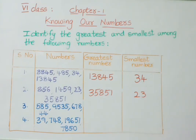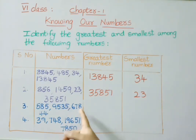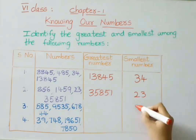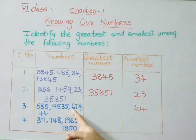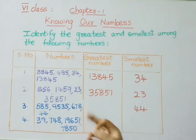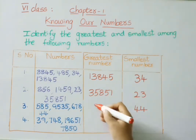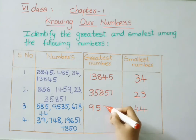See the next example: 585, 9,535, 678, and 44. Among all these, 44 is the smallest number. Now see the remaining numbers: 3-digit number 585, 4-digit number 9,535, and 3-digit number 678. Among these, the 4-digit number is greater, so the greatest number is 9,535.